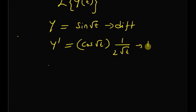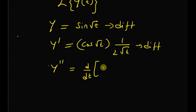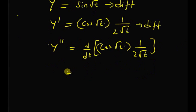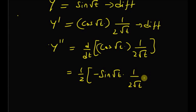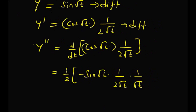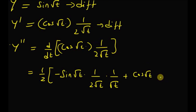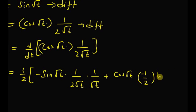Differentiating for the second time, we have y'' = (1/2) · derivative of cos(√t) · (1/(2√t)), which gives (1/2) · [−sin(√t) · (1/(2√t)) · (1/√t)] plus cos(√t) · derivative of (1/√t), which is −(1/2) · t^(−3/2). This is the second derivative of y.